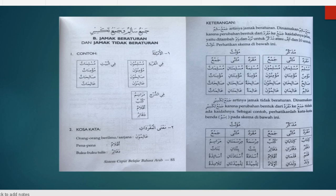Sementara jama' yang tidak beraturan itu disebut dengan Jama' Taksir. Kenapa disebut dengan Jama' Taksir? Karena bentuk asal kata mufradnya itu berubah atau pecah. Jadi tidak seperti pada Jama' Mudzakkar dan Mu'annas. Kalau Jama' Mudzakkar dan Mu'annas hanya menambahkan di akhirnya saja tambahan huruf. Sementara Jama' Taksir tidak, bentuknya akan berubah.